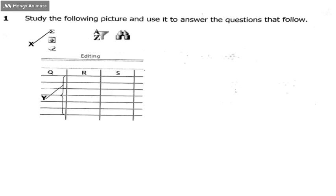Question one is as follows: study the following picture and use it to answer the questions that follow. Take time to study the picture. Make sure you take note of those parts that are labeled by letters. As you can see, we have got X there, we have got Y here, and we have got those letters there which is Q, R, S.